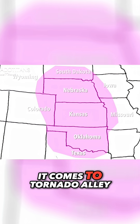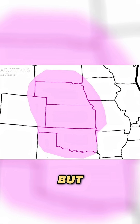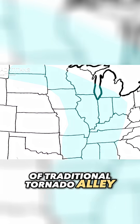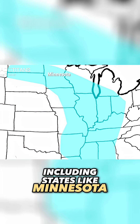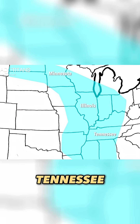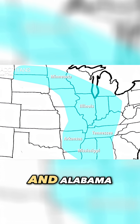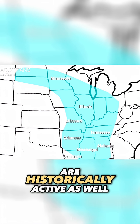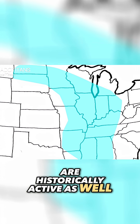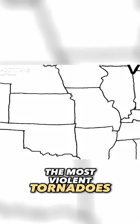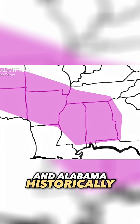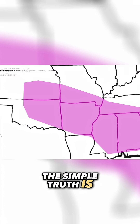But the area just east of traditional tornado alley, including states like Minnesota, Illinois, Tennessee, Arkansas, Mississippi, and Alabama, are historically active as well. In fact, the most violent tornadoes occur along a northwest-to-southeast belt from southern Kansas and Oklahoma into Arkansas, Mississippi, and Alabama.